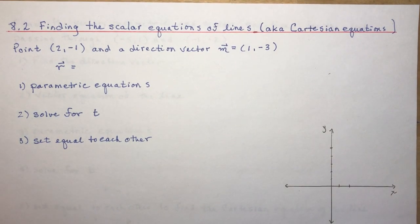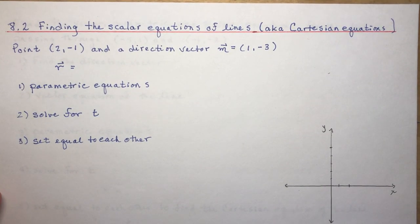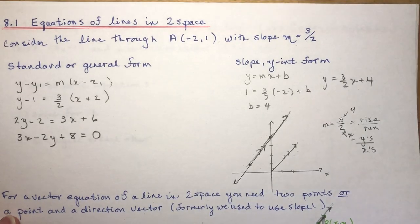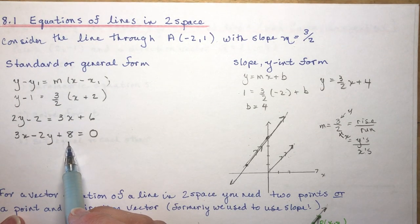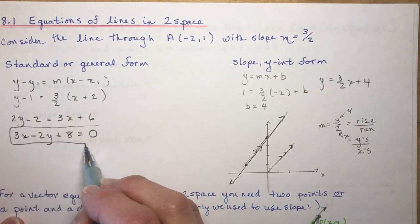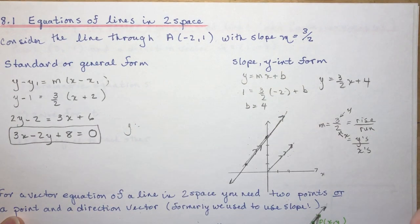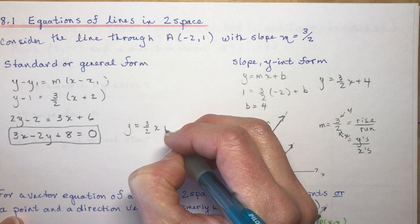Section 8.2: finding the scalar equations of lines, also known as Cartesian equations. Before we start, I want to go back to something from the last lesson and point it out even more clearly. I want you to take a look at this — our other equation was y equals 3-halves x plus 4, which was the equivalent line in slope y-intercept form.